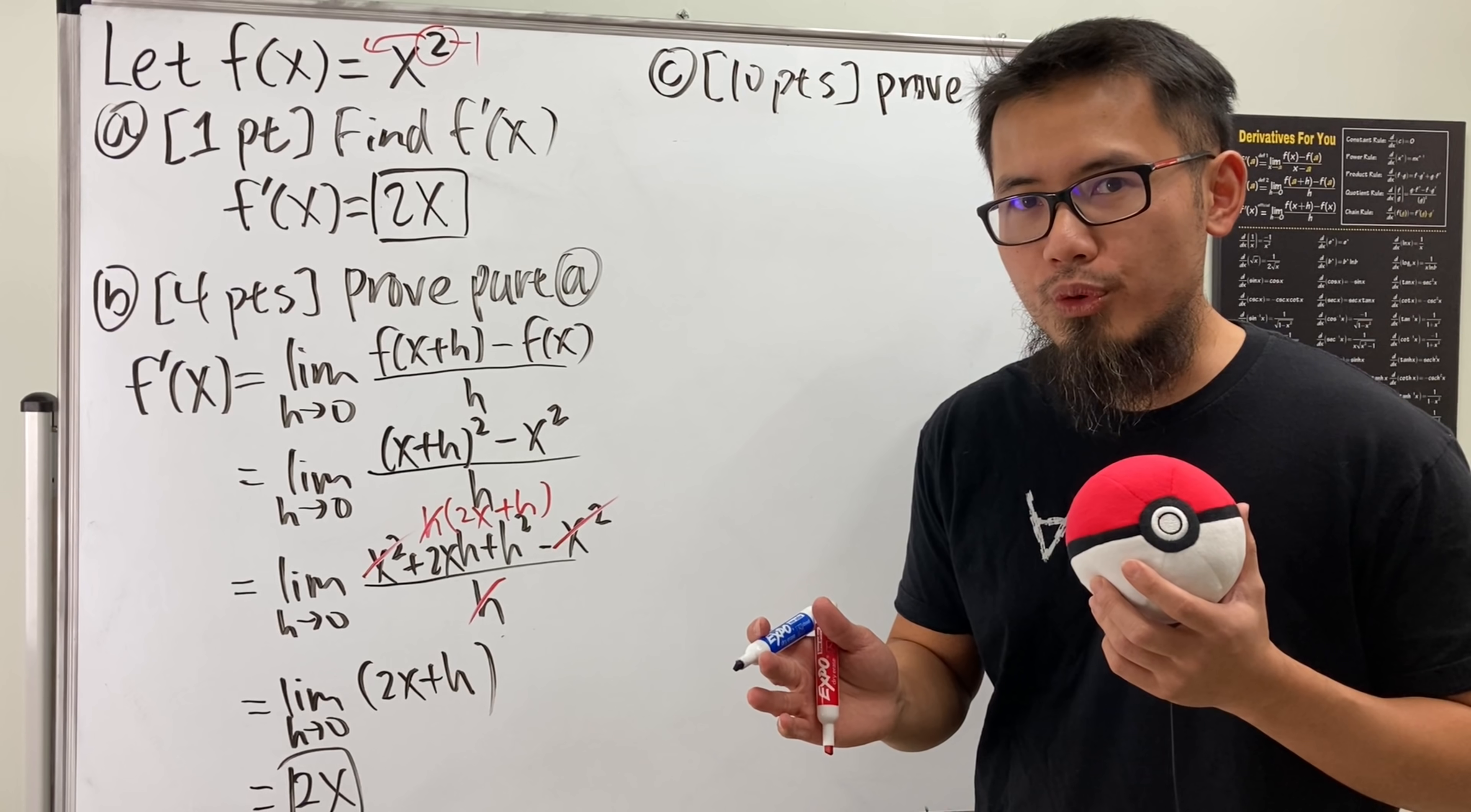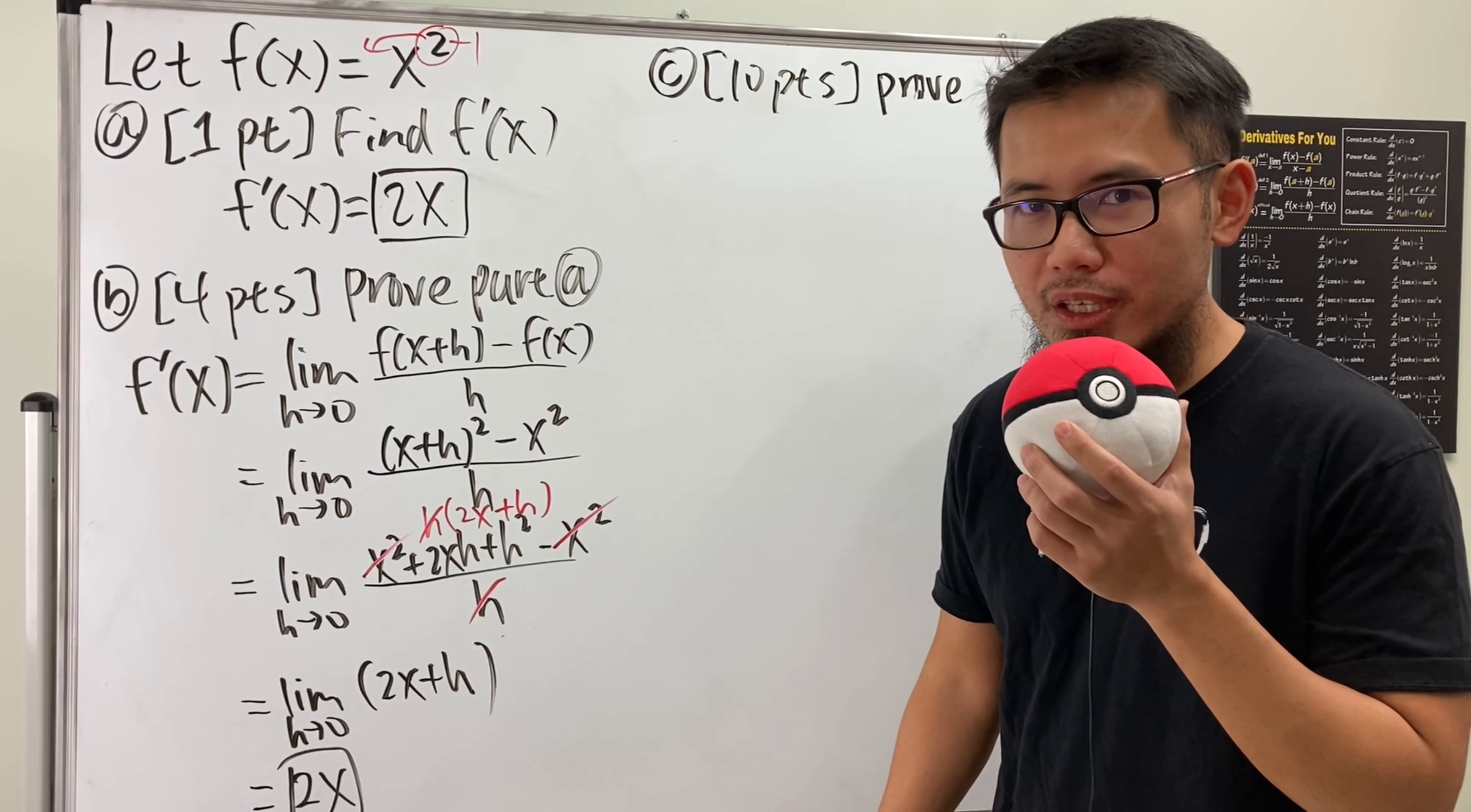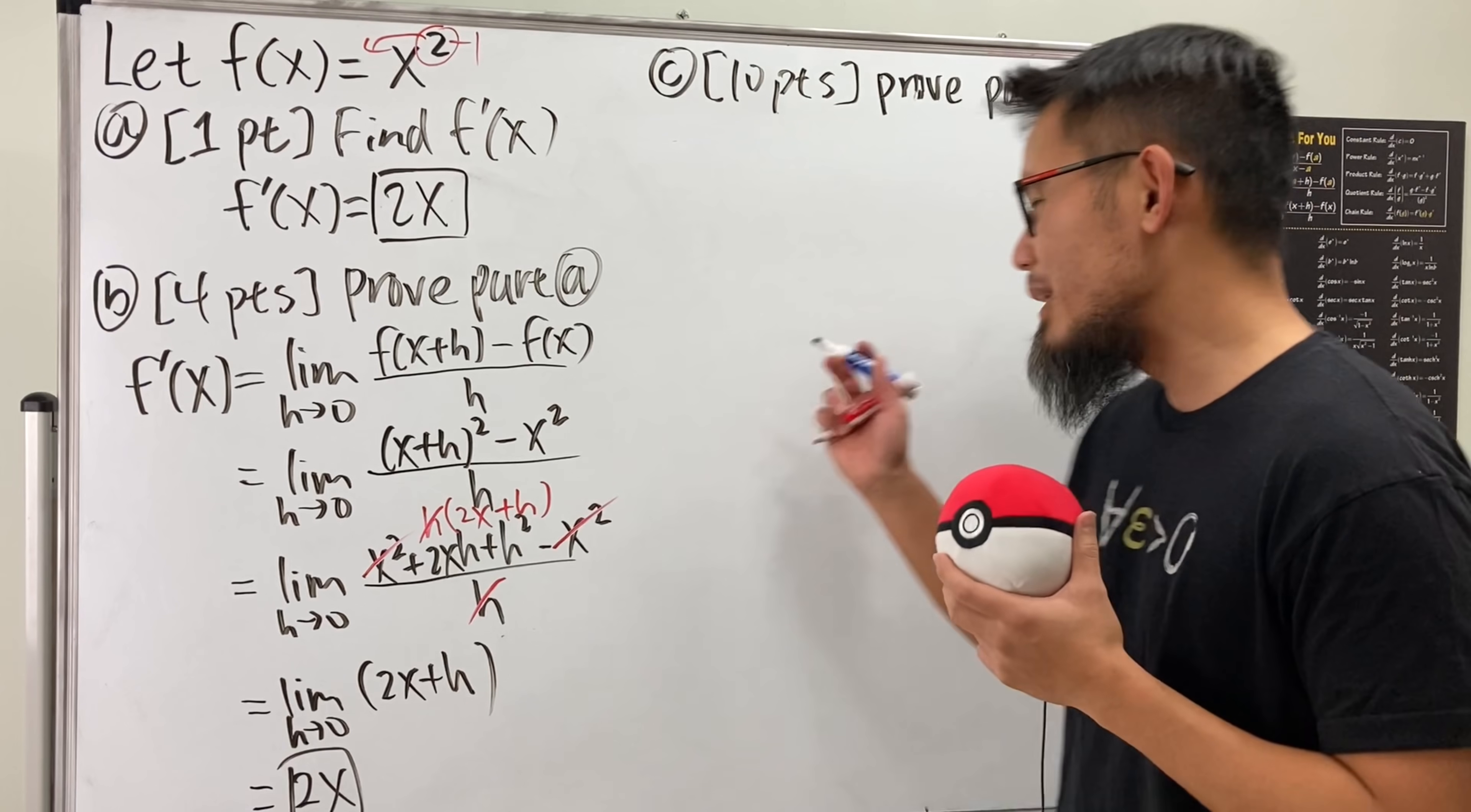All right, now let me tell you. Sometimes if you don't know how to do a proof on the test, just go ahead and write down some definitions. Because that way, you might be able to get some partial credits. But of course, we have to know the definition first, right? So let me put that down right here for you guys.